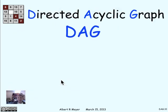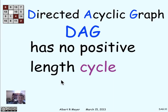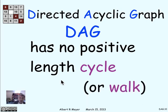A directed acyclic graph is defined as a digraph that has no positive length cycles — it's acyclic. Equivalently, since cycles are a special case of closed walks and positive length closed walks imply cycles, it can be defined as a digraph that has no positive length closed walk.